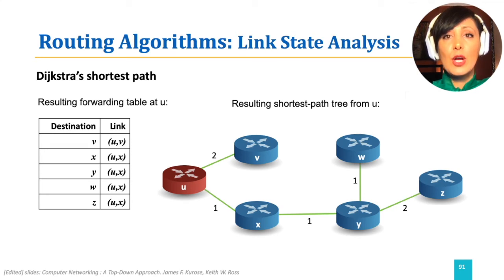For example, to reach node X, the direct link U and X will be taken, and to reach node Z, also the link U and X will be taken, with next hop being X.